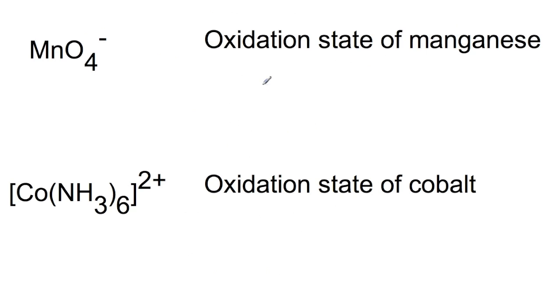If we start having a look now at some transition metal complexes. So here we have permanganate. So we have minus one equals the oxidation state of manganese plus four times minus two for oxygen. So we have minus one equals manganese minus eight.